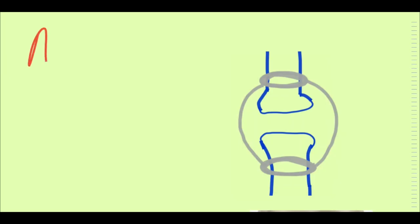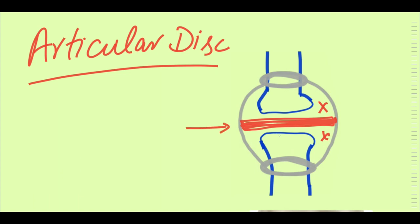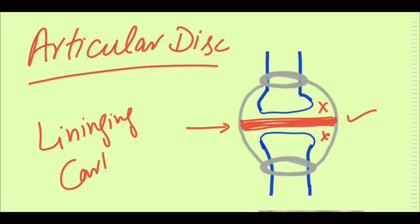An intra-articular disc is present between the two contacting bones and divides the joint cavity into two compartments. The disc is made of fibrocartilage. Importantly, when an articular disc is present inside the joint cavity, the lining cartilage changes — instead of hyaline cartilage, the articular surfaces will be lined by fibrocartilage.